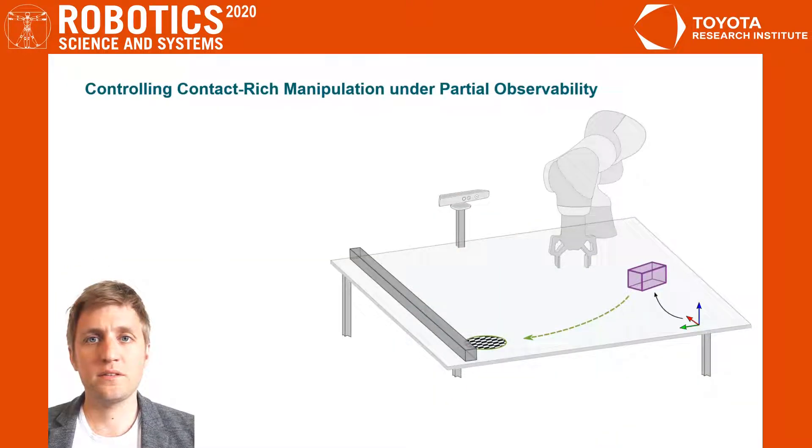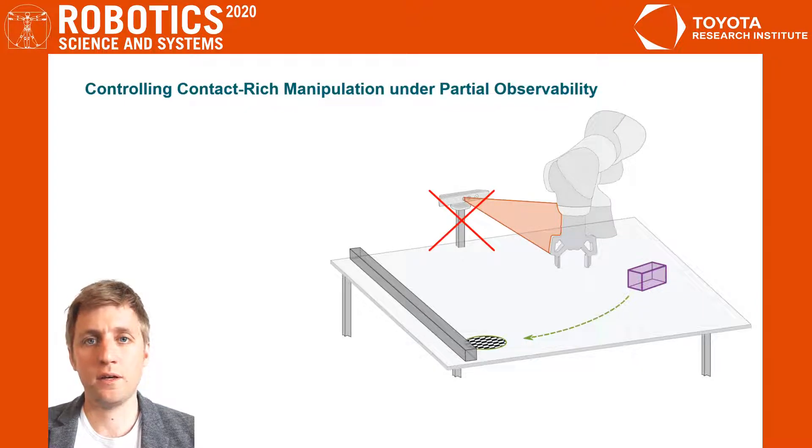In contact-rich manipulation tasks such as assembly, a camera's field of view can get frequently obstructed by the robot. However, without the use of visual sensors, simple tasks such as the pushing task shown here can get quite challenging.